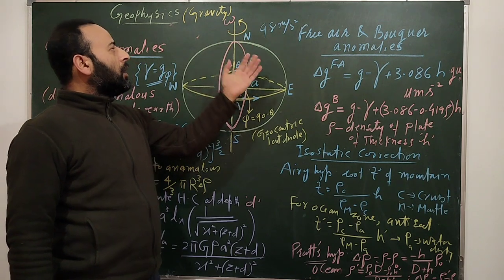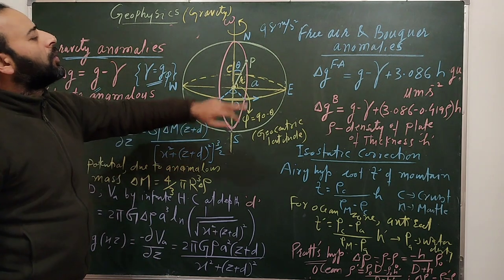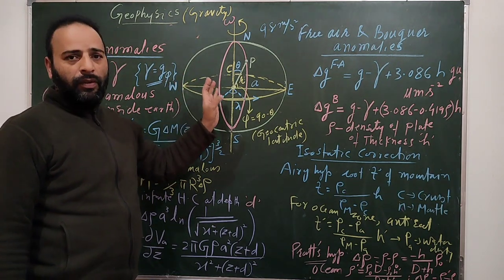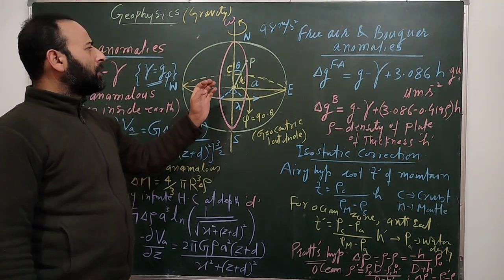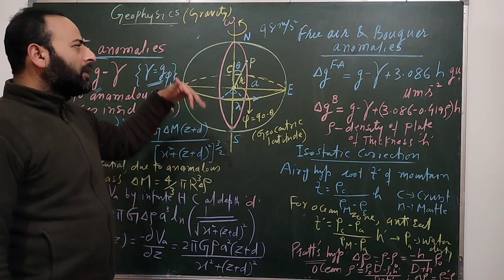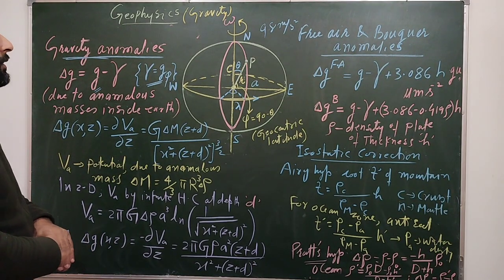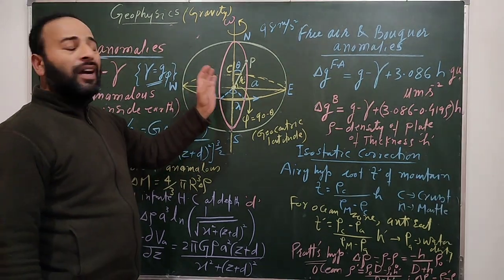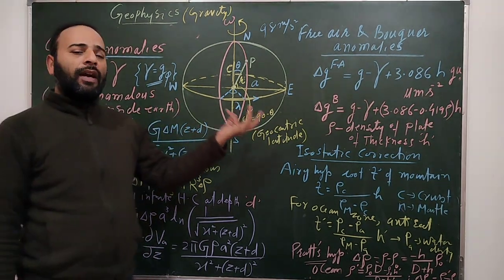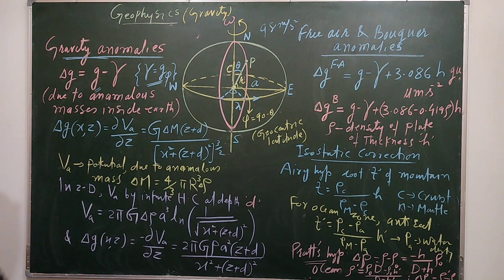The value of g also varies with depth inside the earth, above the surface, due to the shape of the earth, and due to the rotation of the earth. Additionally, moving from one place to another — because of unusual features like rocks, mountains, terrain, or deep valleys — the value of g changes. We need to correct g at different positions, depths, and levels. Where g decreases we add a correction; where g increases we subtract it.